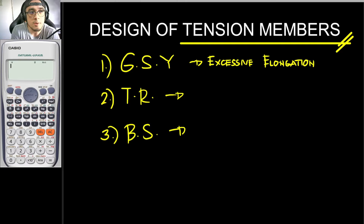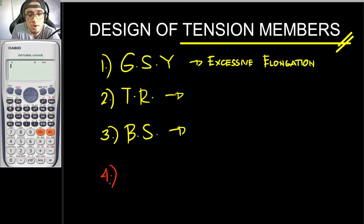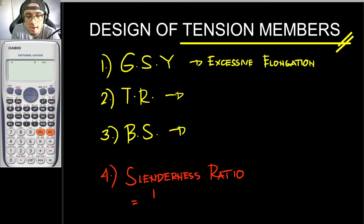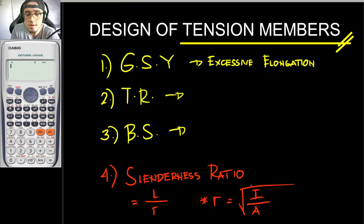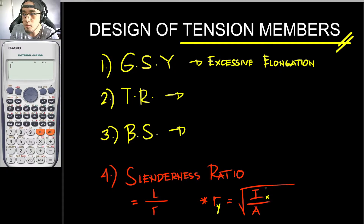In designing a tension member, another parameter must also be considered: the slenderness ratio. The slenderness ratio is equal to the effective length divided by the radius of gyration. The radius of gyration r is equal to the square root of the moment of inertia divided by the area. For the x-axis, use Ix; for the y-axis, use Iy.